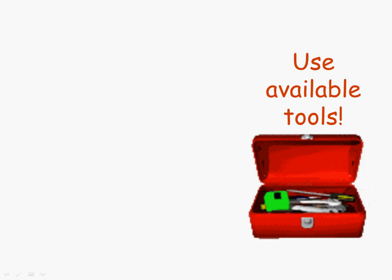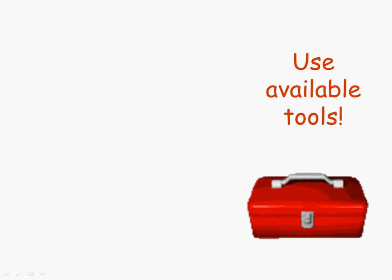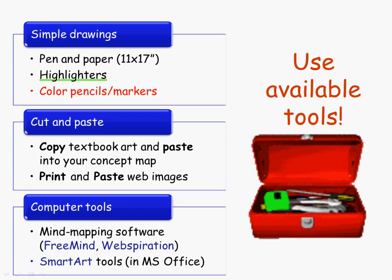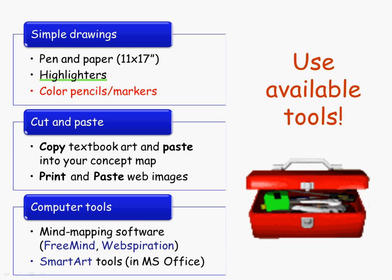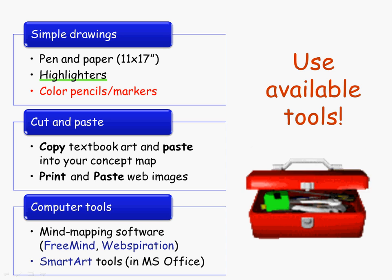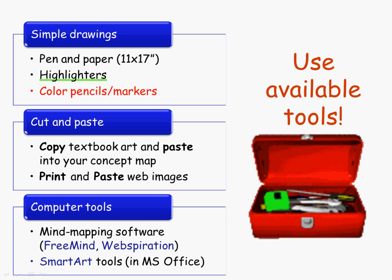There are lots of tools you can use to make the process of making a concept map easier and more effective. For simple drawings, just use pen and paper. I recommend trying to get a stack of larger paper — 11 by 17 inch paper or legal size paper from your copy center or school bookstore. The bigger the paper you start with, the more room you have, and you can always fold it up like a map. Some people use wrapping paper or butcher paper, drawing it out in a big roll and then folding it up like a road map to stick in their folder.